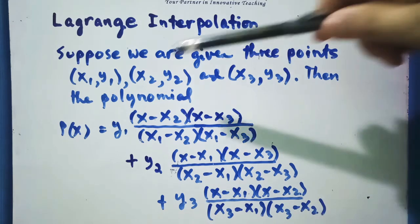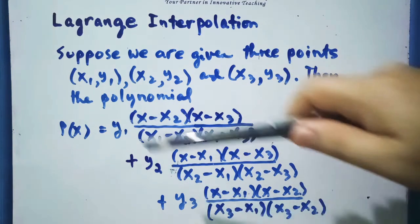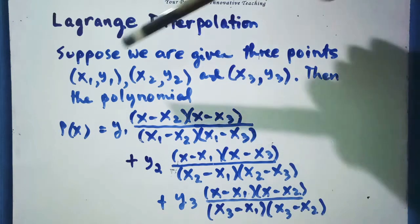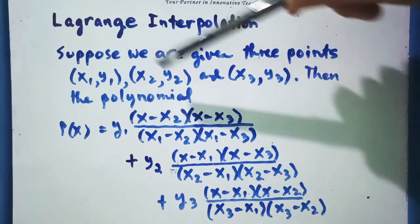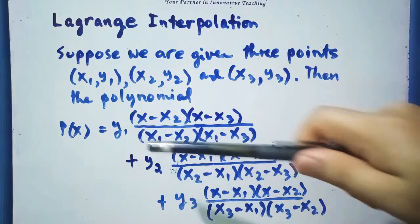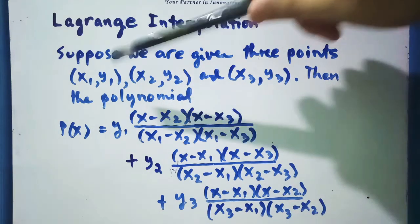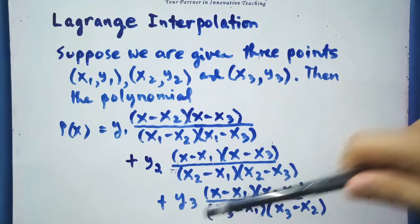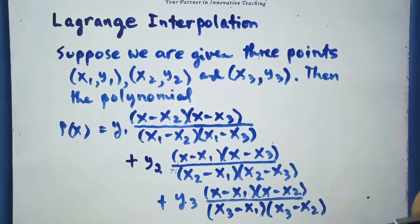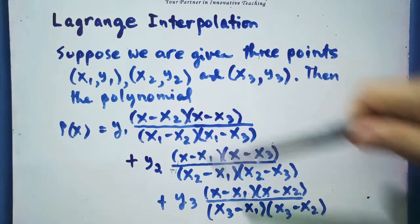If this is y sub 3, then we have x sub 3 minus x sub 1 times x sub 3 minus x sub 2 in the denominator. So for this case we have 3 given points, giving us y sub 1, y sub 2, and y sub 3. If we have 4 or 5 points — say for example 5 given points — then we will have y sub 1, y sub 2, y sub 3, y sub 4, y sub 5. If we have 4 given points, then we will have y sub 1, y sub 2, y sub 3, y sub 4, and the format is similar for the x values.